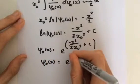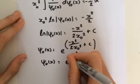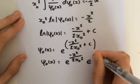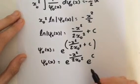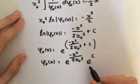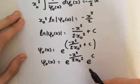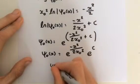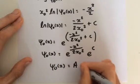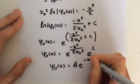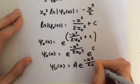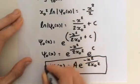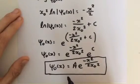e to the c is just a constant and we can let e to the c equal A. So therefore we have it in the familiar form from part 1. And that is the wave function for the ground state.